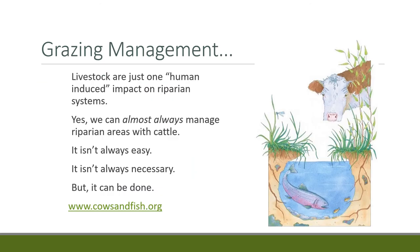In closing, livestock are just one of many human-induced effects on riparian areas. Riparian systems in the west are also hampered by roads, railroads, and culverts going right by riparian areas. Yes, we can almost always manage riparian areas with cattle and meet riparian goals, but it isn't always easy. For more information, visit www.cowsandfish.org, created by Canadian land managers and agencies who have done a good job bringing together the science about cows and fish.